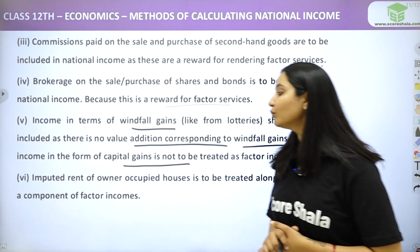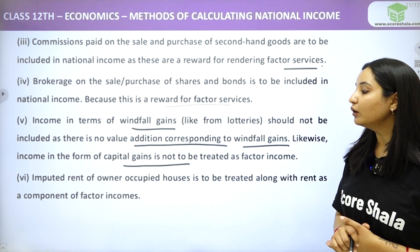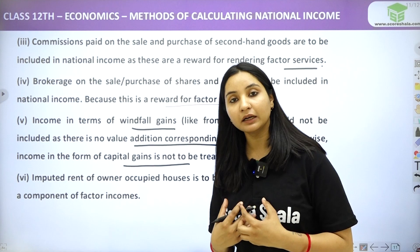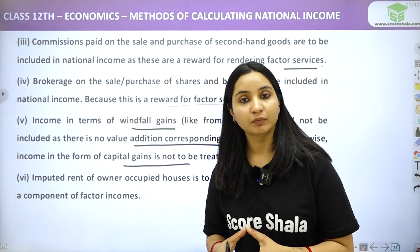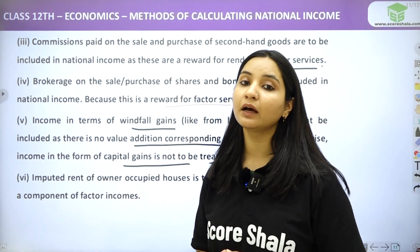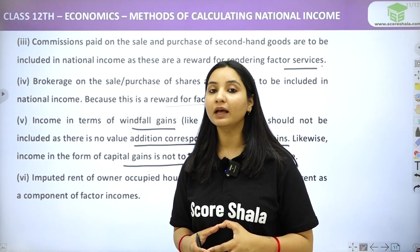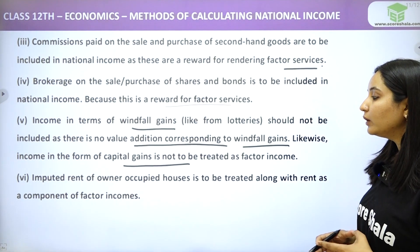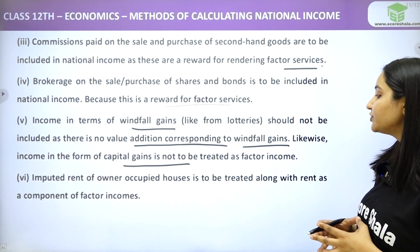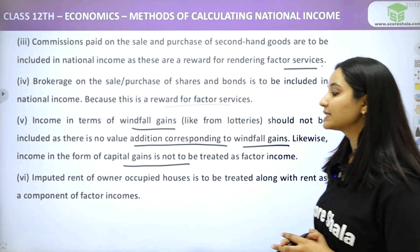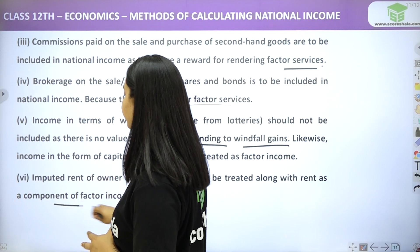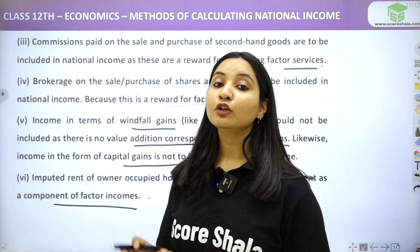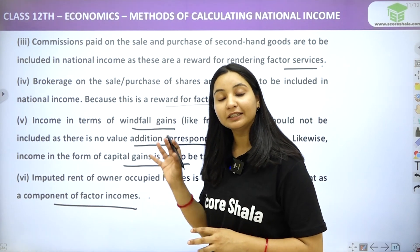The next point is imputed rent on an owner-occupied house. Imputed rent of an owner-occupied house is to be treated along with rent as a component of factor income. So the rent amount is also included in national income.